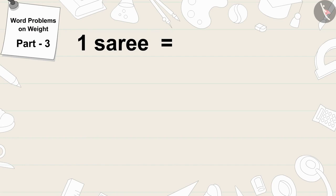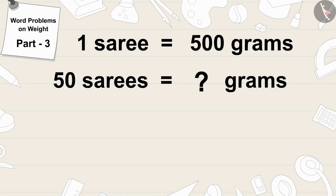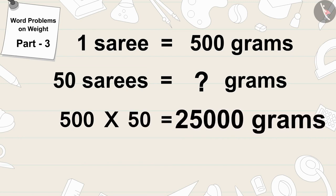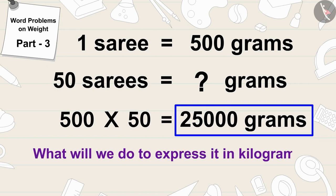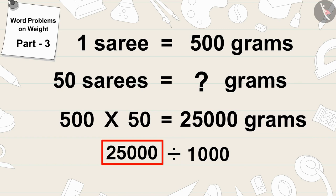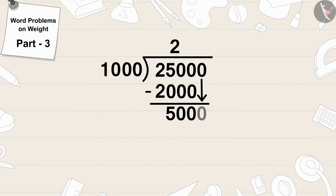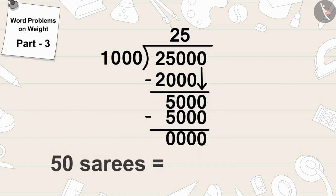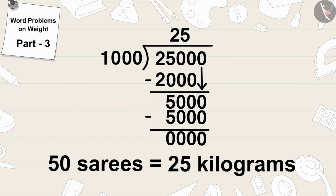A sari weighs 500 grams. To find the weight of 50 saris, we have to multiply the weight of one sari by 50. 500 multiplied by 50 equals 25,000 grams. Now to express it in kilograms, we will divide 25,000 by 1,000. 25,000 divided by 1,000 is 25. In this way, the total weight of 50 saris of Banno will be 25 kilograms.